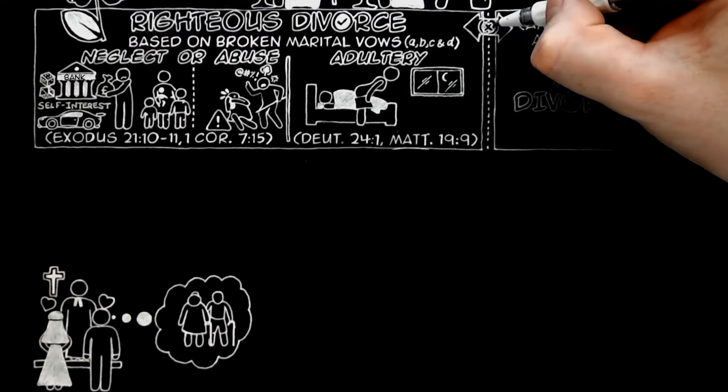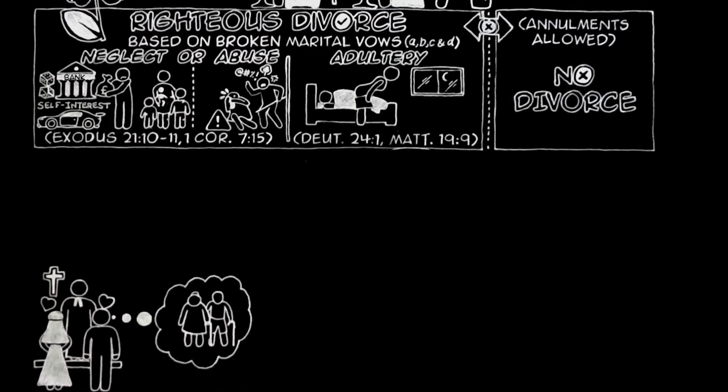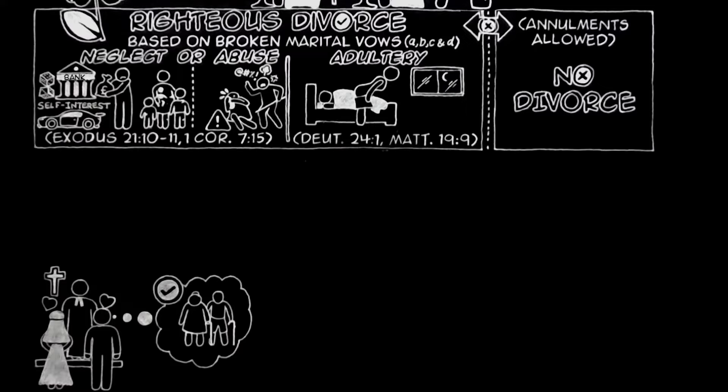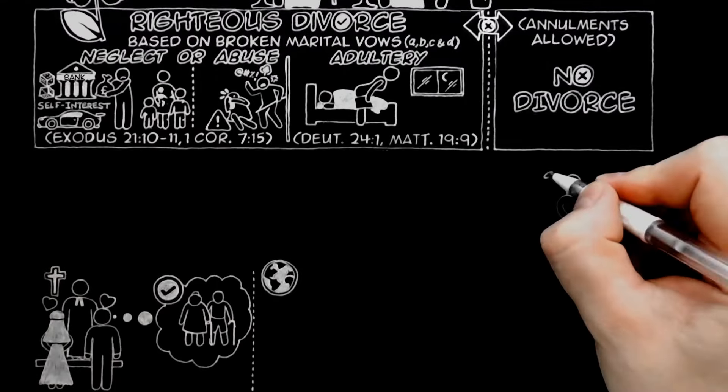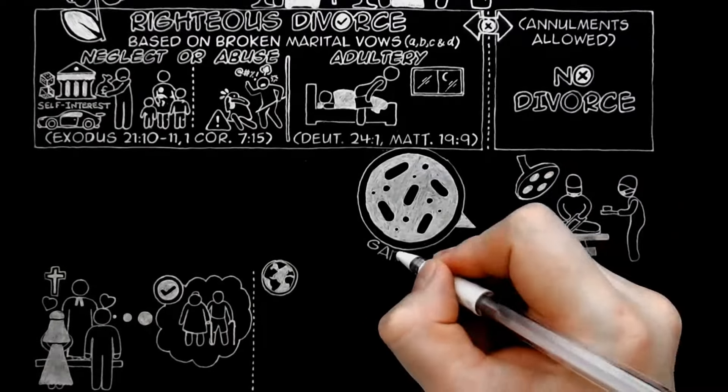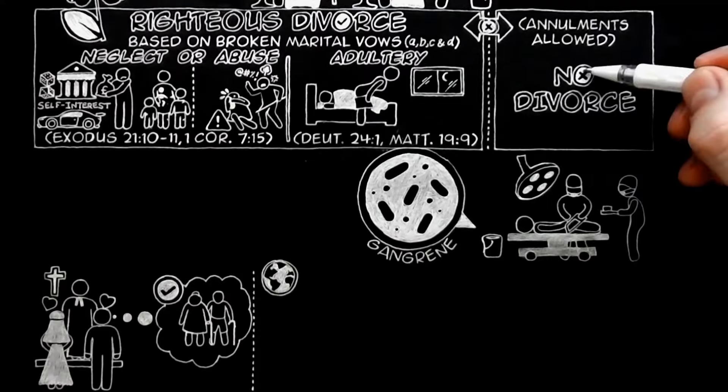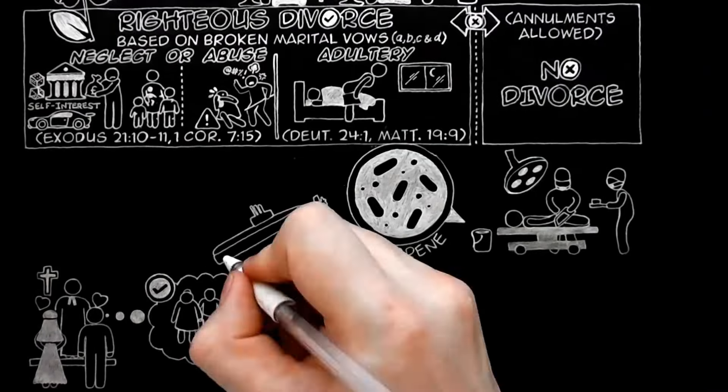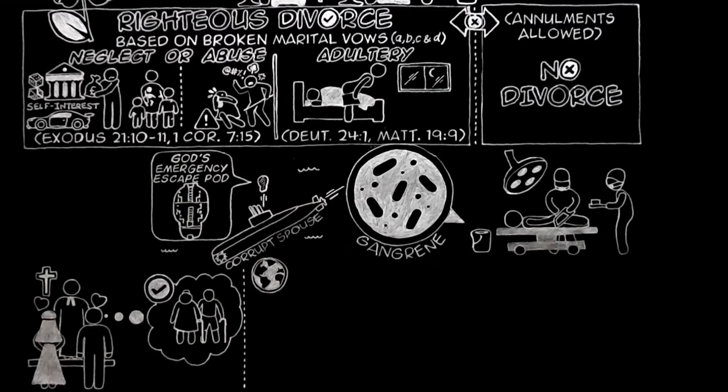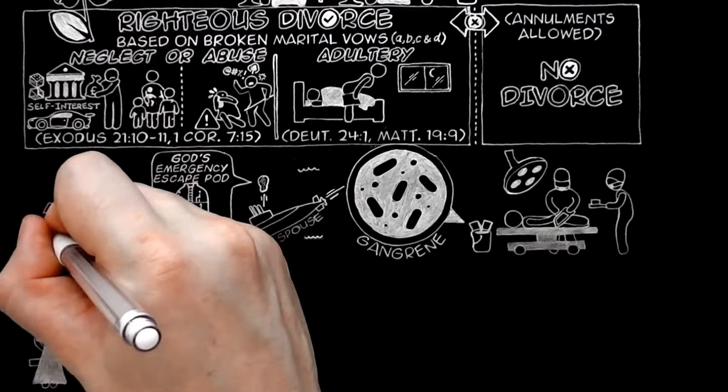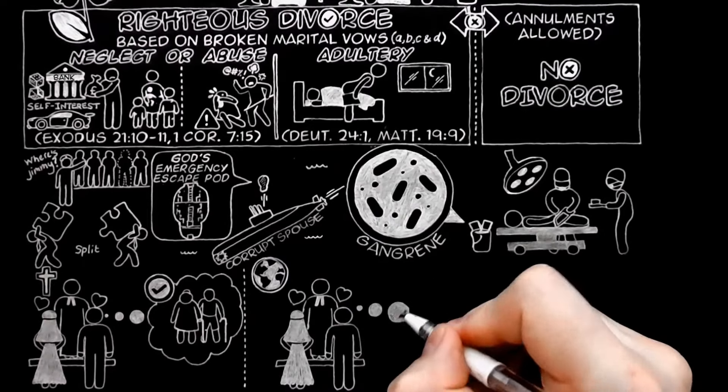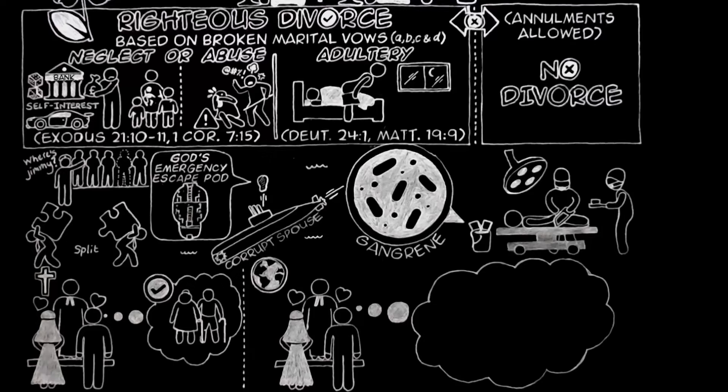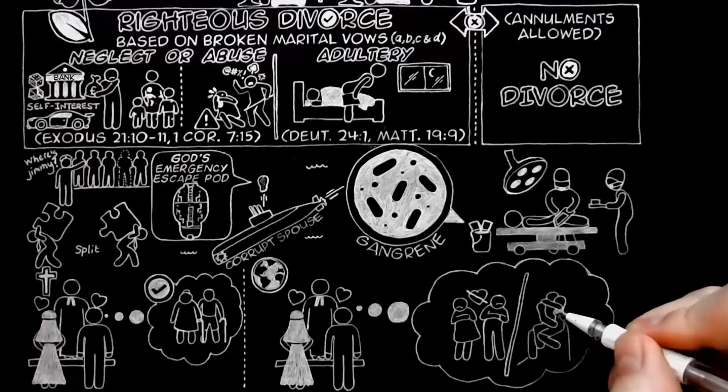It is a great pity that Christians should disagree about such a question. But for an ordinary layman, the thing to notice is that the churches all agree with one another about marriage a great deal more than any of them agrees with the outside world. They all regard divorce as something like cutting up a living body, as a kind of surgical operation. Some of them think the operation is so violent that it cannot be done at all. Others admit it as a desperate remedy in extreme cases. They are all agreed that it is more like having both your legs cut off than it is like dissolving a business partnership or even deserting a regiment.